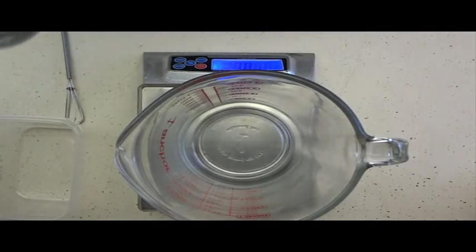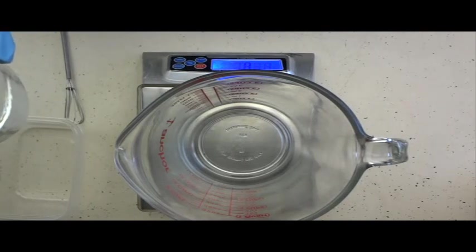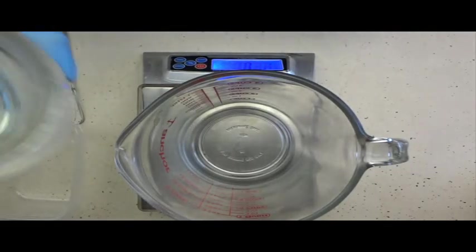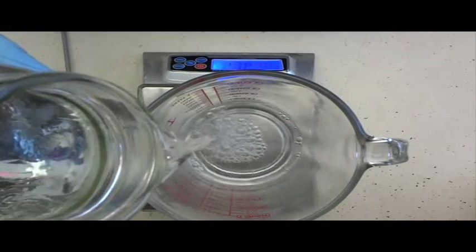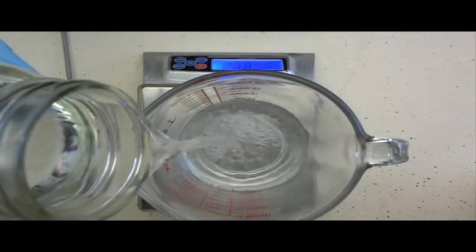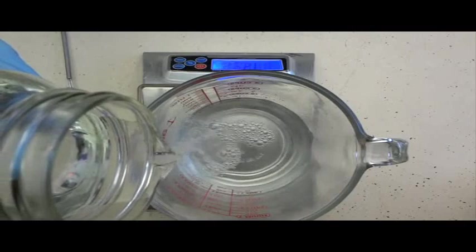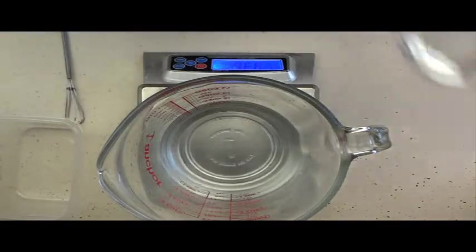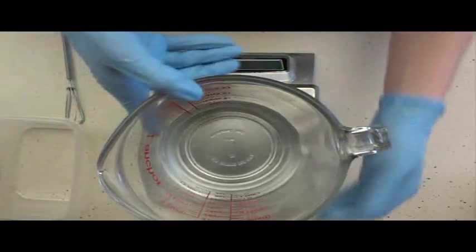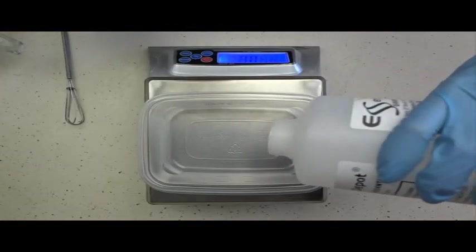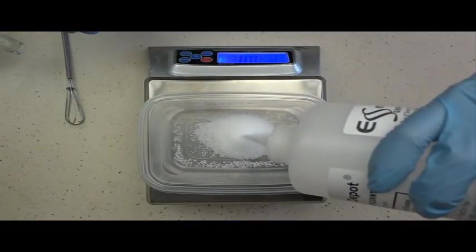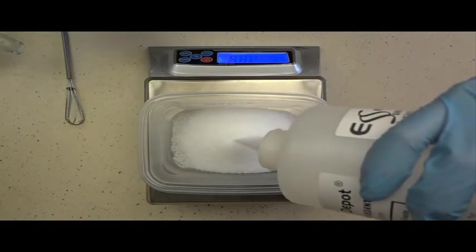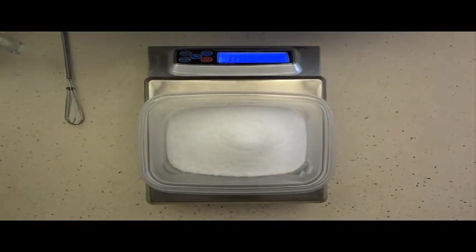So the first step is to weigh out your water and your lye. In this recipe I'm using 13.5 ounces of distilled water and 9 ounces of sodium hydroxide. This is a 40% lye solution. This is using less water than you usually use when you make soap. Okay, there's my 9 ounces of lye.